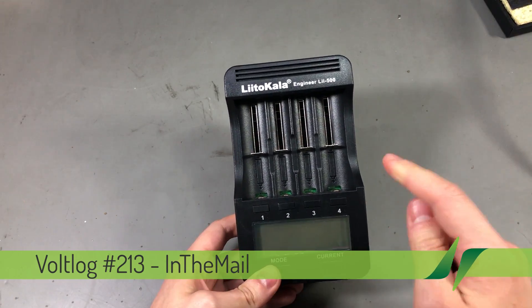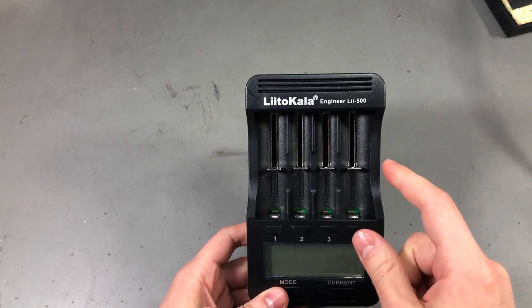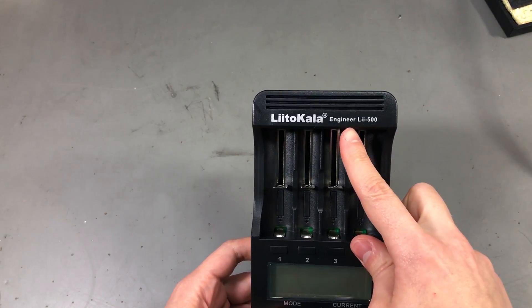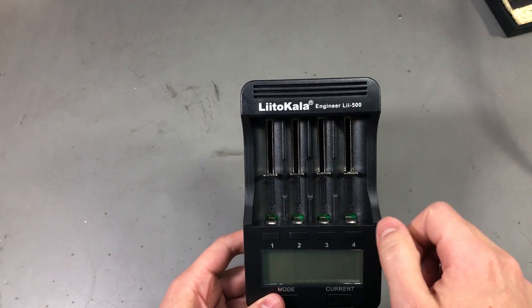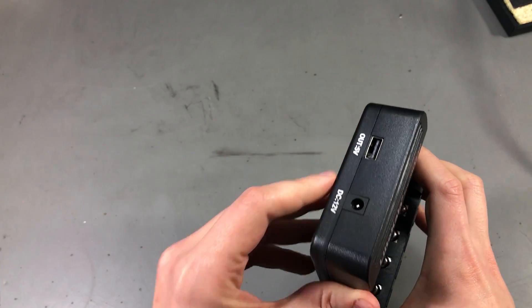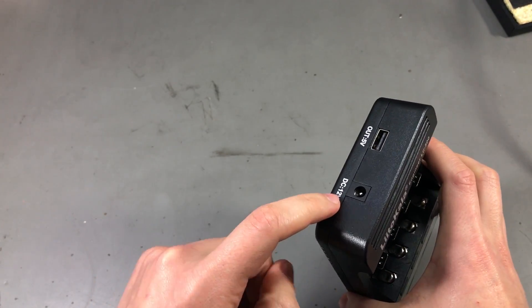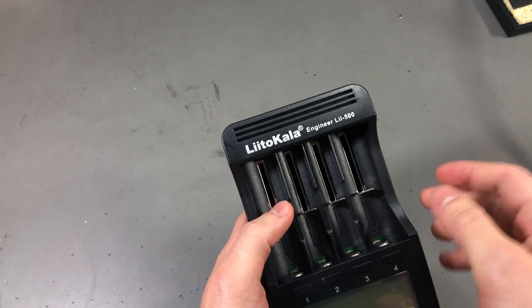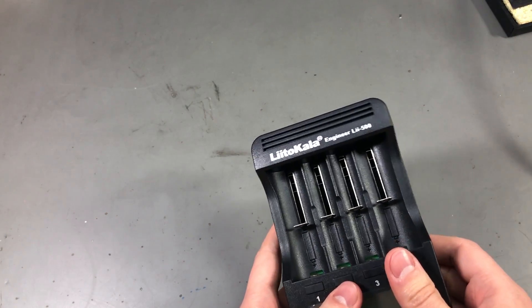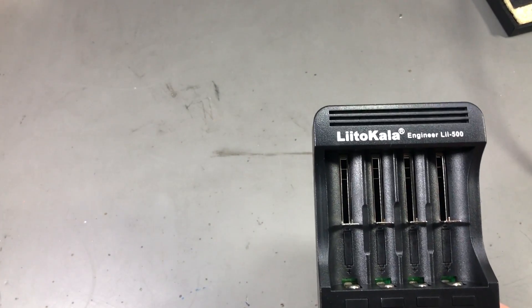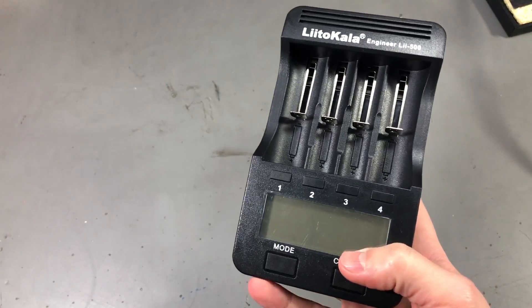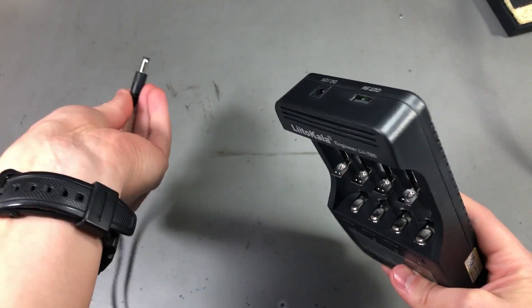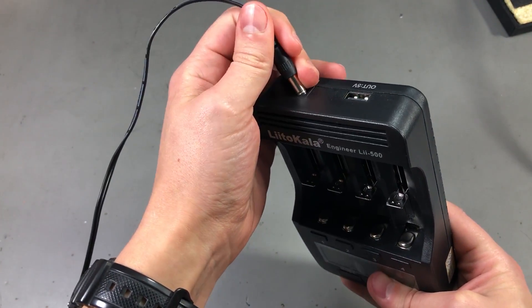We're going to start with this battery charger from LiitoKala, model number Engineer Li-500. It works with an external 12V power supply, which I opted not to get from the supplier because we all have a bunch of 12V adapters from old equipment. So I have one right here, let's plug it in.